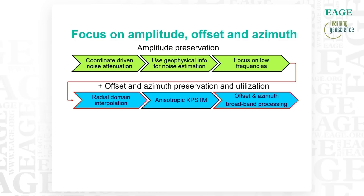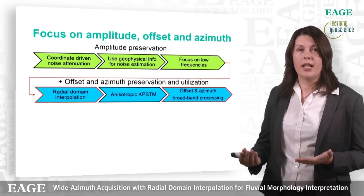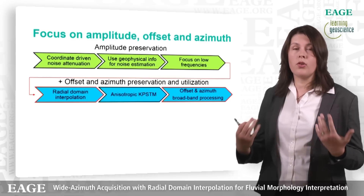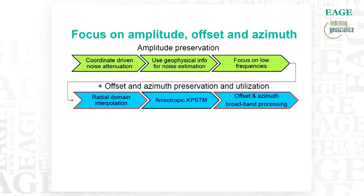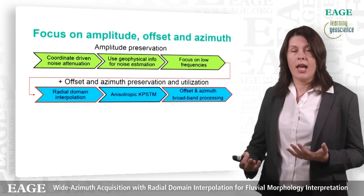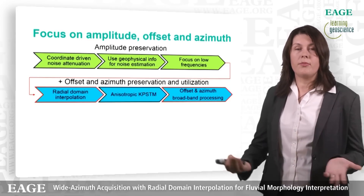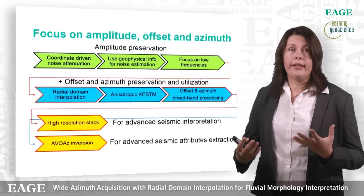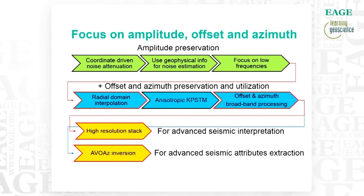The next stage is preparation for migration, and here is the main difference in what we are proposing for new processing. We output data into regularly spaced offset and azimuth gathers, preserving offset and azimuth information through migration and post-migration processing. We also use azimuth velocities during velocity analysis, and we process all offset and azimuth gathers individually. This then gives us a choice: we can sum them all together for a high resolution stack for advanced seismic interpretation, or keep them separate for AVO-AZ inversion for advanced seismic attribute extraction.